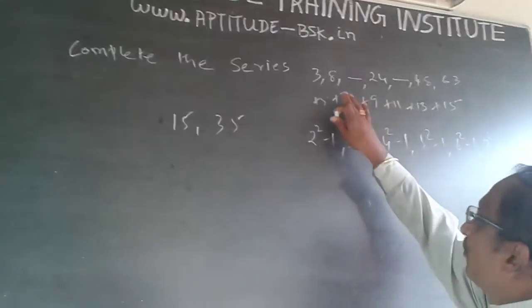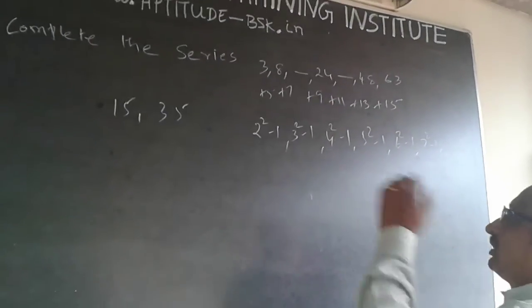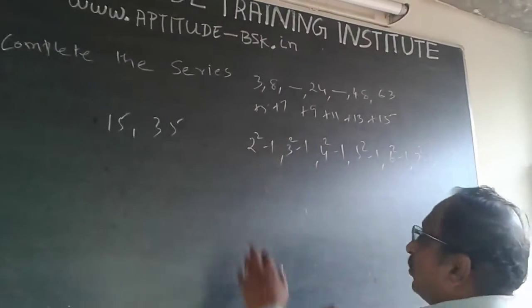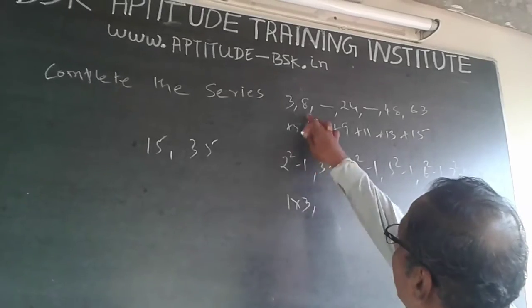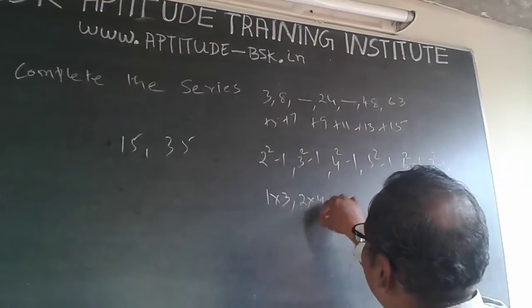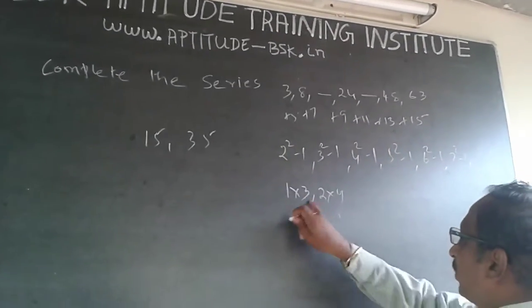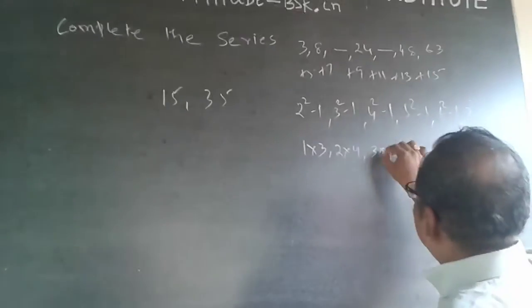One more method is also possible. You are getting 3 here, so it could be 1 into 3. Then it is 2 increase - 2 into 4, increasing everything by 1. Then 3 into 5 is 15.